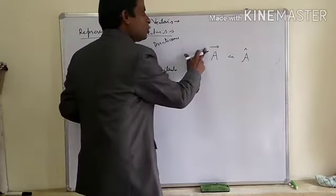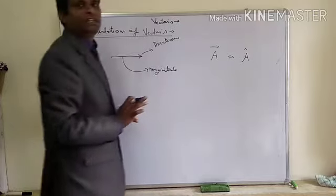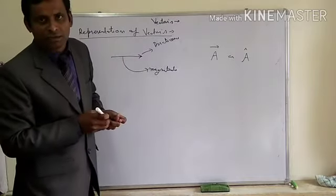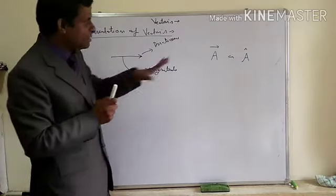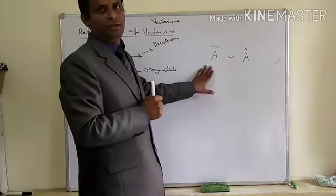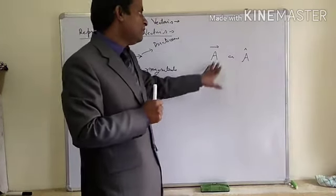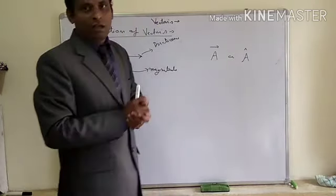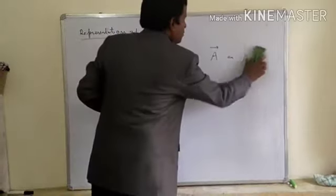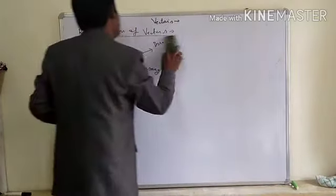Vector can be represented by two ways: diagrammatic way means arrow, or you put a cap on the letter. If there is no arrow and no cap, then we will say it is a scalar quantity, not a vector quantity. Scalar means having only magnitude, not a vector. If there is an arrow or a cap, then we will say it is a vector quantity. Representation is of two types.